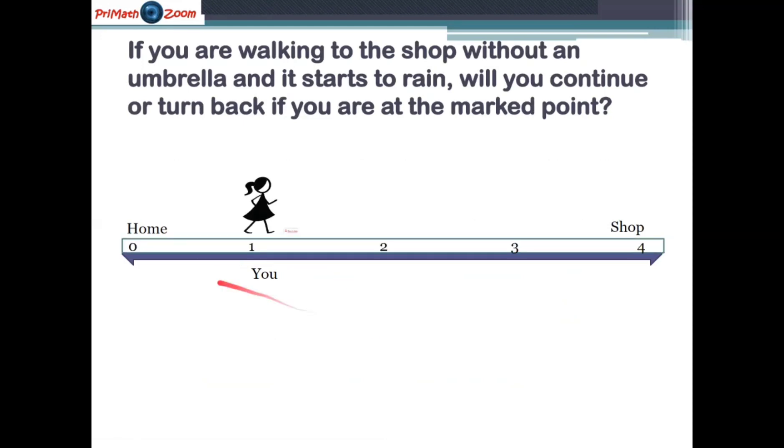Based on this ruler here, you will realize that the distance from home to shop, we would have divided into different parts, equal parts. So with distance, we divided the distance into one part, two parts, three parts, four parts. That means you would have divided the distance into quarters or into fourths.